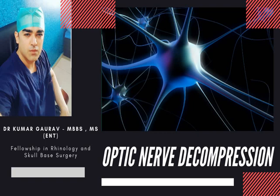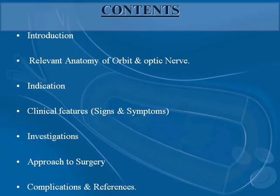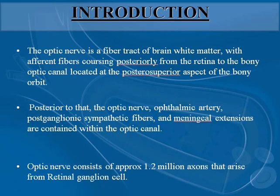The topic for today is optic nerve decompression. The contents are: the introduction, the relevant anatomy of the orbit and the optic nerve, the indications, the clinical features and symptoms, the investigations, the approach to the surgery, and the complications with references. Introduction: the optic nerve is a fiber tract of the brain white matter with afferent fibers.